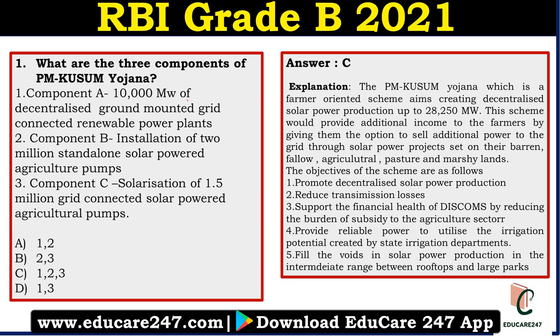The next question asks: what are the three components of PM Kusum Yojana? There are specifically three components you need to know. Component A: 10,000 megawatt of decentralized ground-mounted grid-connected renewable power plants. Component B: installation of 2 million standalone solar-powered agriculture pumps. Component C: solarization of 1.5 million grid-connected solar-powered agriculture pumps.